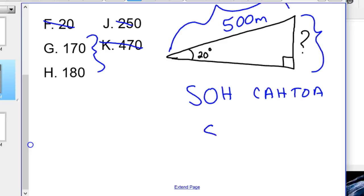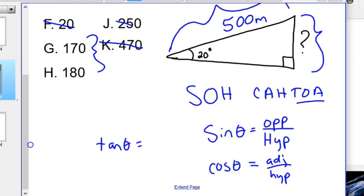And what that means is sine theta - if you've never seen this before, you need to go find some videos on it - but it's sine theta equals opposite over hypotenuse, cosine theta is adjacent over hypotenuse, and the last one, the TOA part, is tangent theta equals opposite over adjacent.